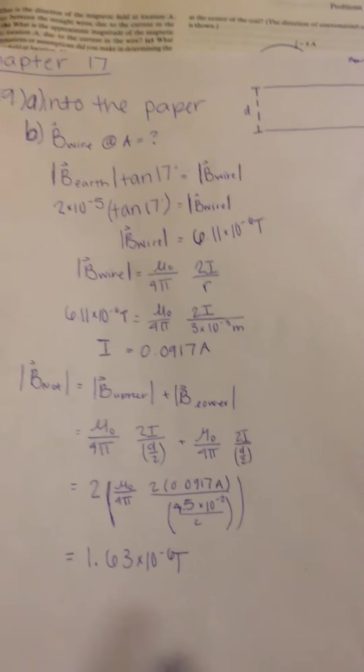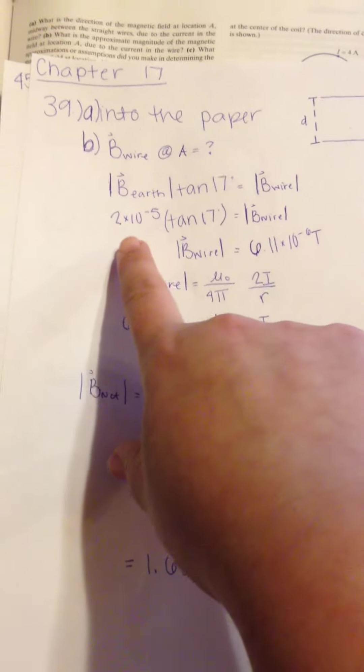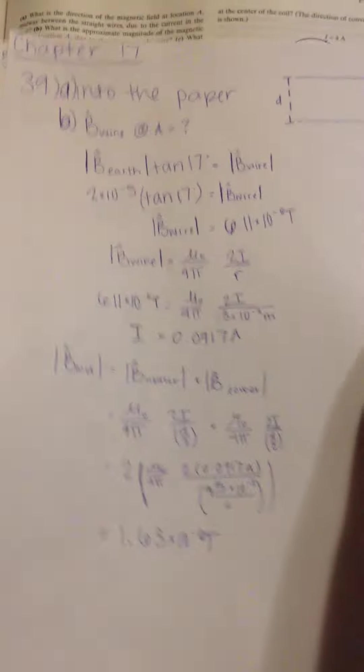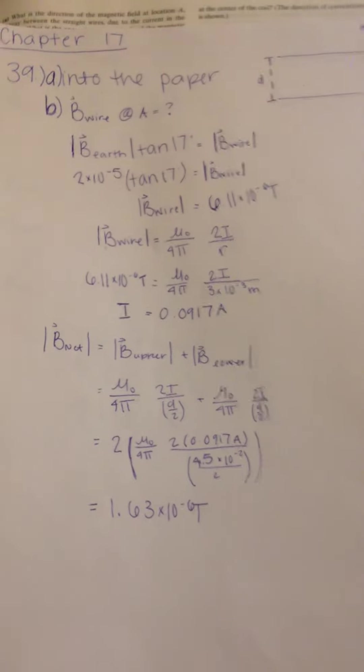So we just play with that formula, and then we're going to get over here. Tangent of 17 degrees times the magnetic field of the earth is going to give me the magnetic field of the wire. So that's going to simplify to 6.11 times 10 to the negative 6 Tesla.